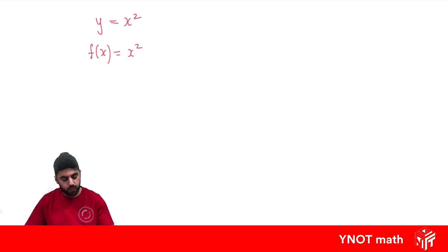If I want to sub 1 in for x, I can now write it as f(1). Wherever I see x, I just replace it with 1, just like I would substitution. 1 squared is 1.